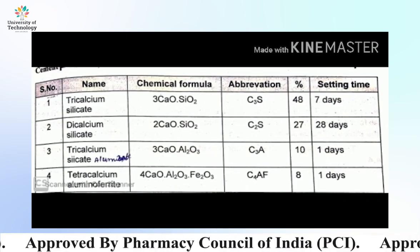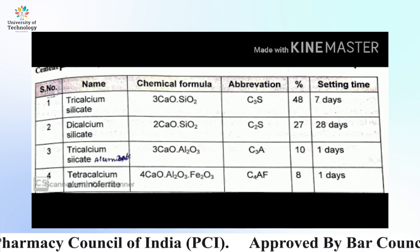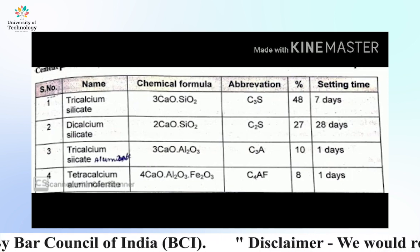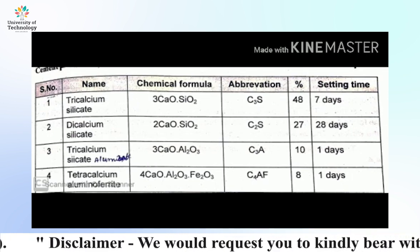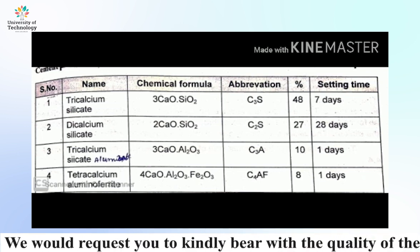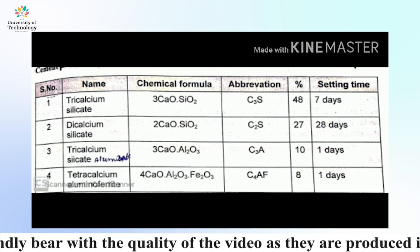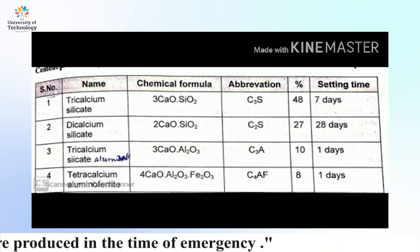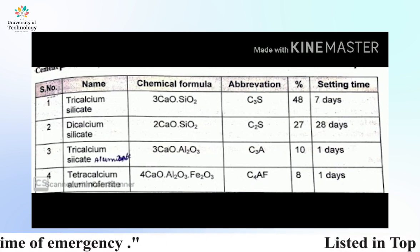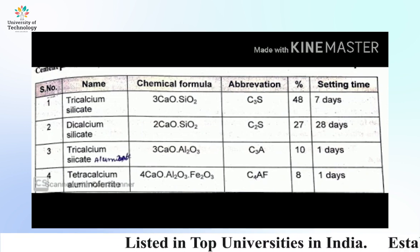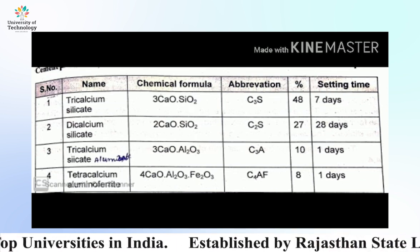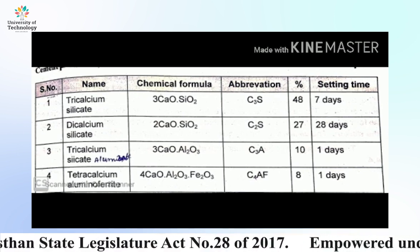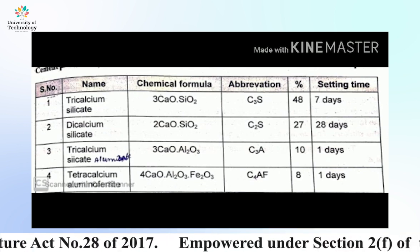Chemical composition of Portland cement: tri-calcium silicate (C3S) makes up 48 percent; di-calcium silicate (C2S) makes up 27 percent; tri-calcium aluminate (C3A) makes up 10 percent; and tetra-calcium alumino-ferrite (C4AF) makes up 8 percent. Regarding setting time: C3S completes in 7 days, C2S in 28 days, C3A in 1 day, and C4AF in 1 day. Thank you.